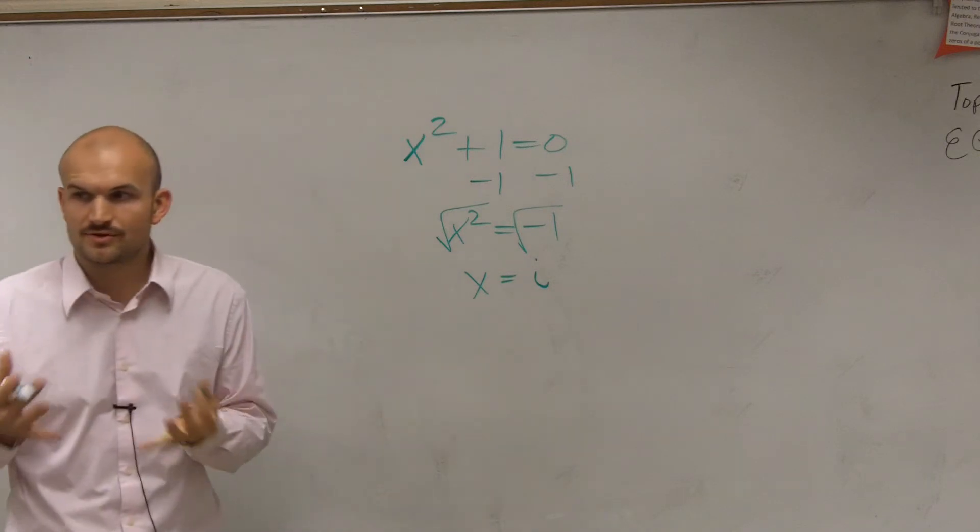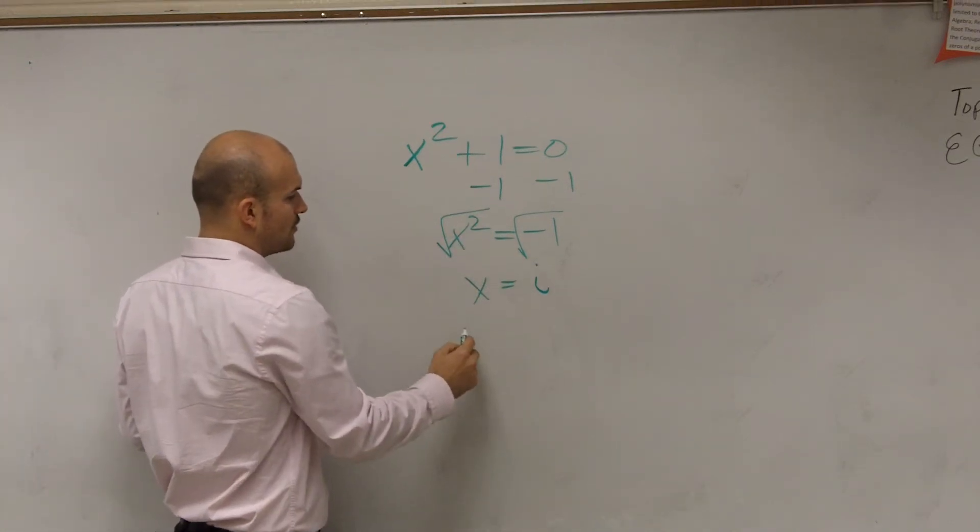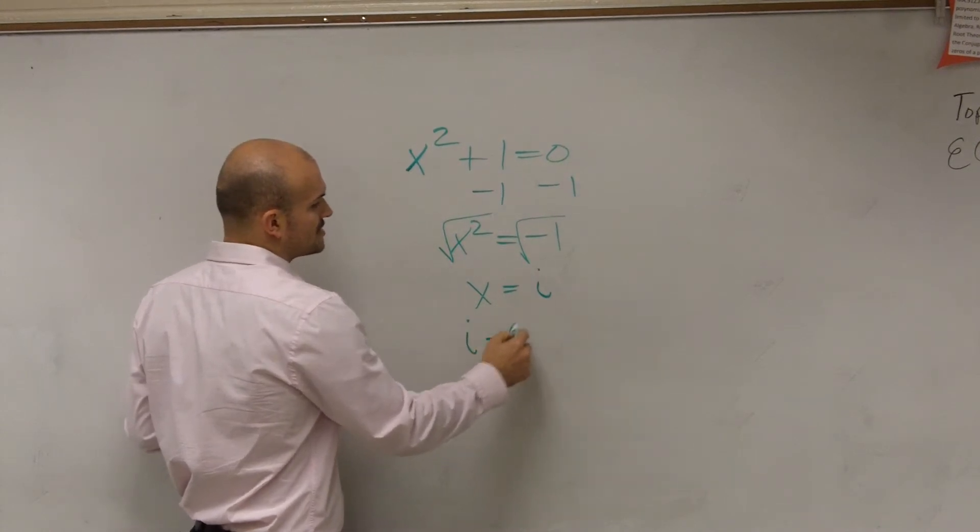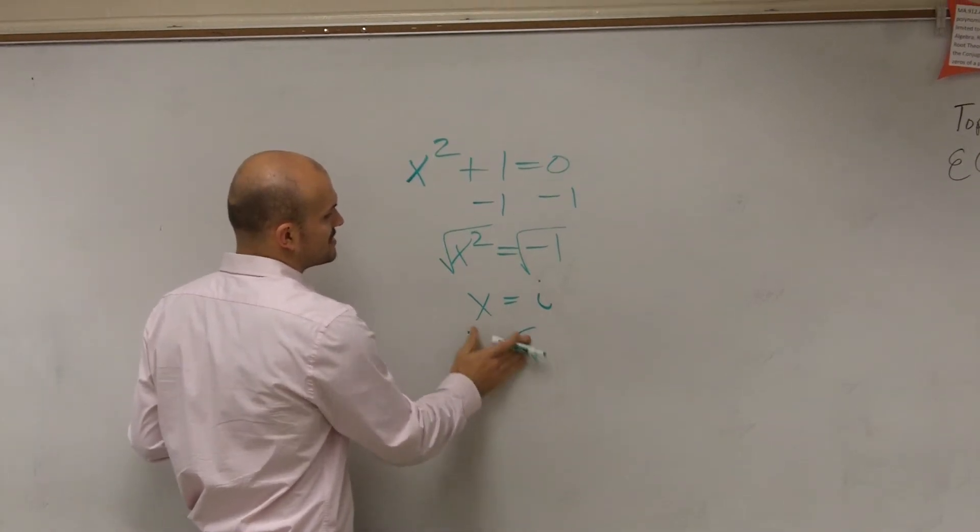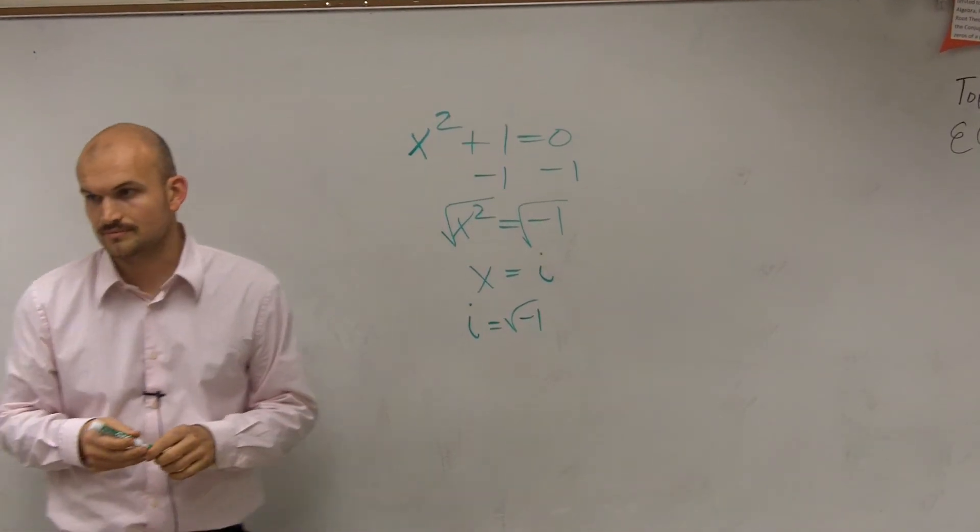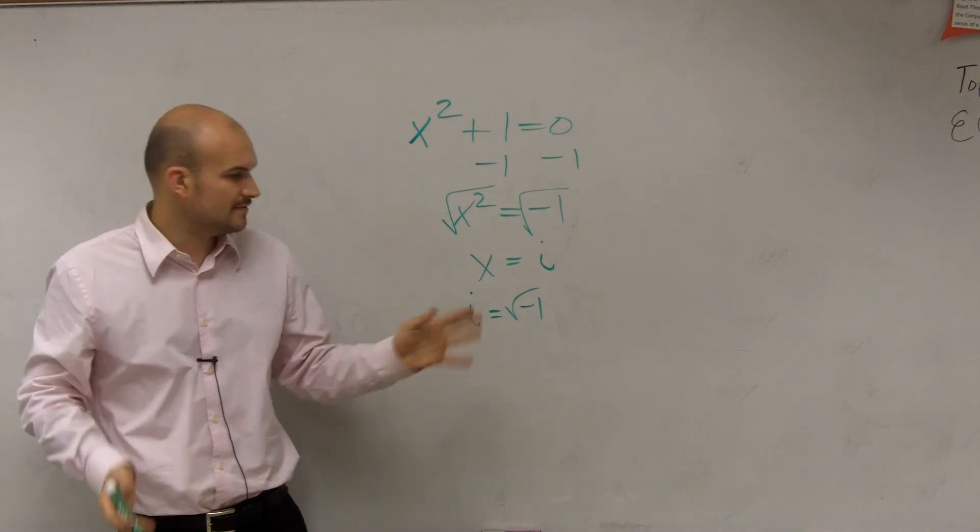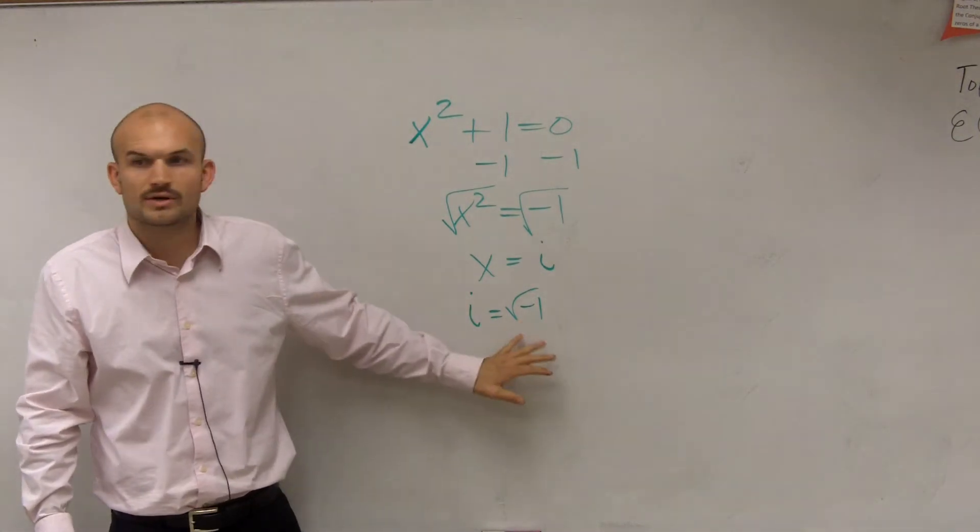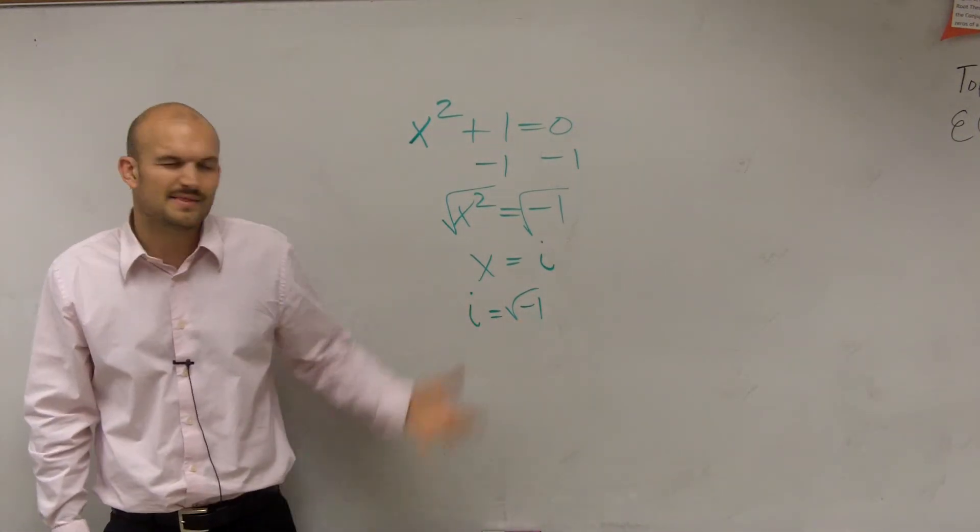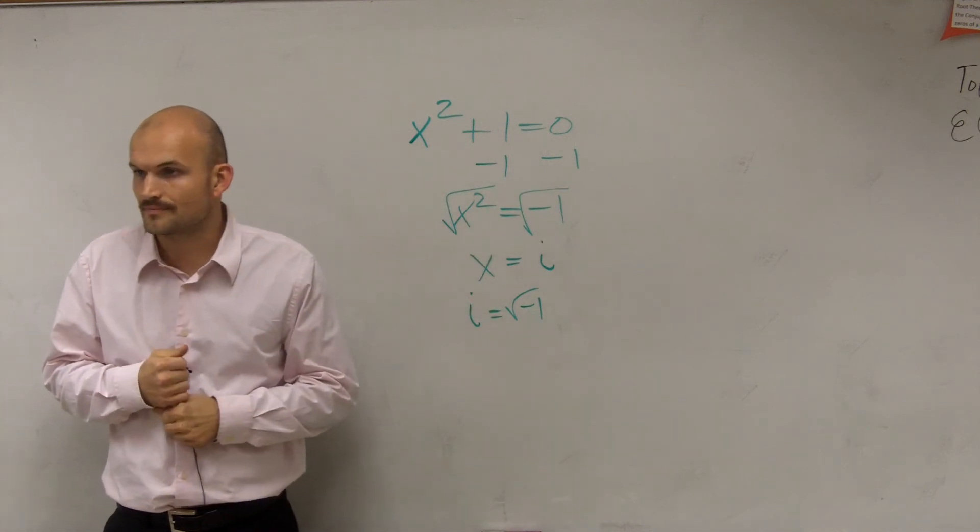So what I want you, when you guys are thinking about this, when I say, what does i represent? I just want you guys to think of i represents whenever we have to take the square root of a negative number. OK? So whenever you have to take the square root of a negative number, or 1, we're going to represent that as i. All right? And that's kind of the basic definition of your imaginary numbers.